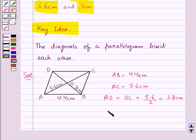Then we have the diagonal BD is equal to 7 cm. Now again, BO would be equal to OD since the diagonals bisect each other. So this would be equal to 7 upon 2 which is equal to 3.5 cm.